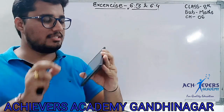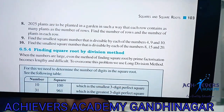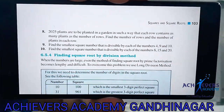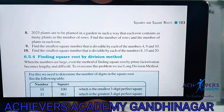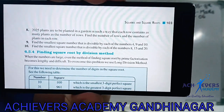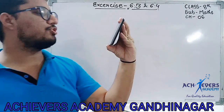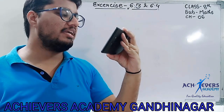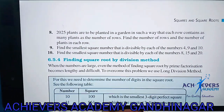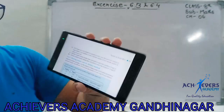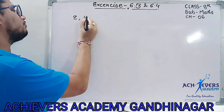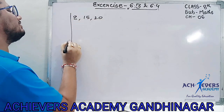Next question. Here also you will do prime factorization and write the answer. Then after that, the next two questions are similar. In those two questions, you need to find the smallest square number that is divisible by each of the numbers 4, 9, 10. And in the one below, it is 8, 15, and 20. Meaning the smallest number by which all three can be divided. In such questions, we do prime factorization — you might know this as LCM.